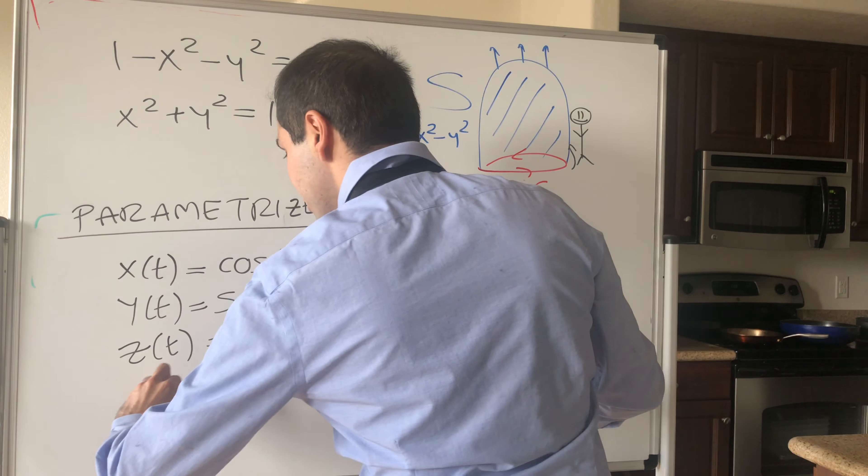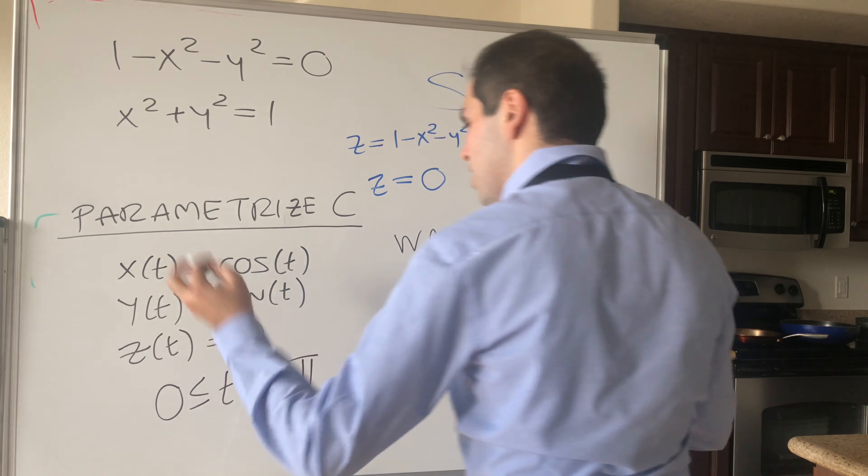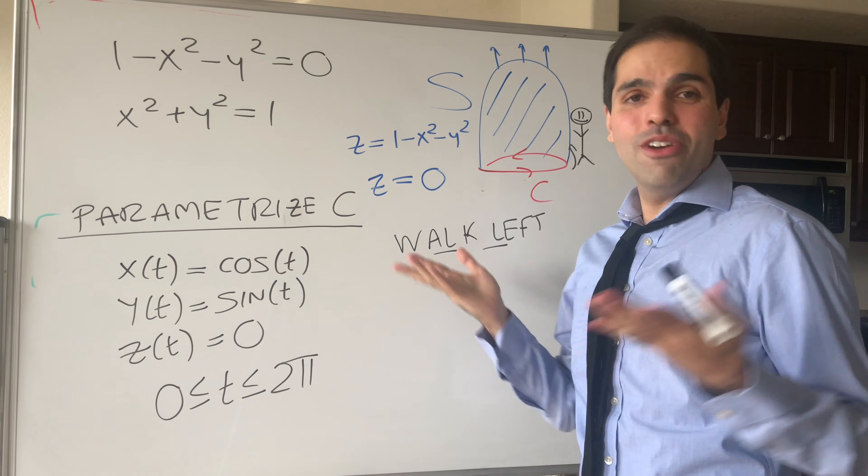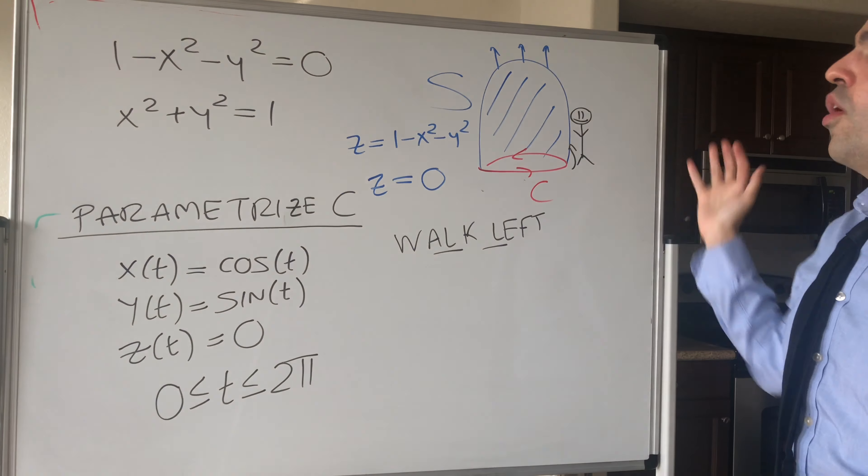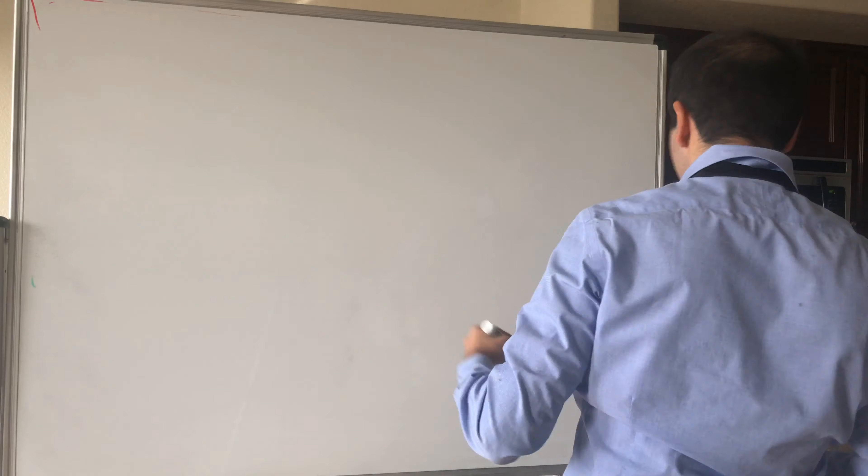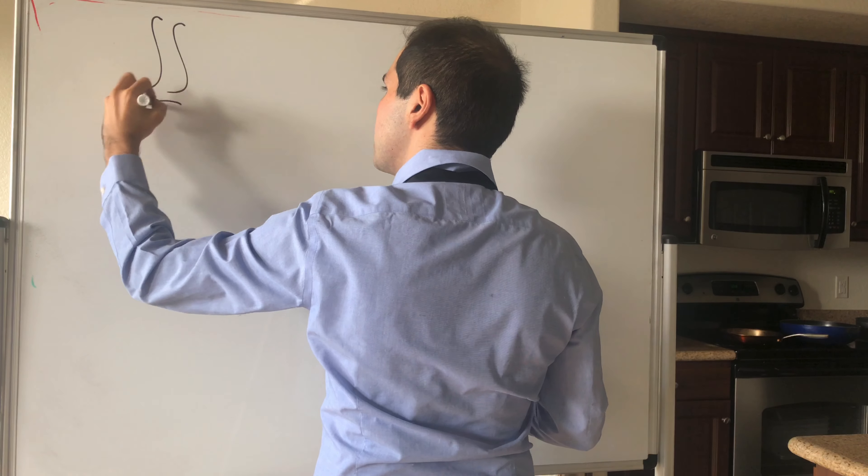All right, very good. And now, that we parameterize C, we're almost done, because now we can just use Stokes' Theorem, which tells us, again, this horrible integral becomes much, much easier. So, again, what do we have? We have by Stokes' Theorem, the double integral of the curl, so the surface integral of the curl equals the usual integral.